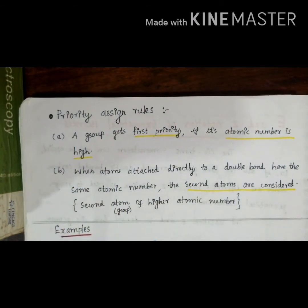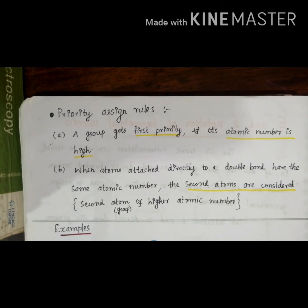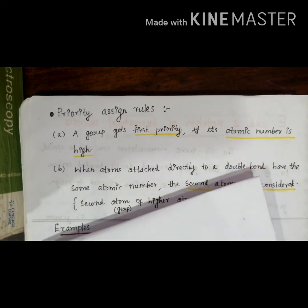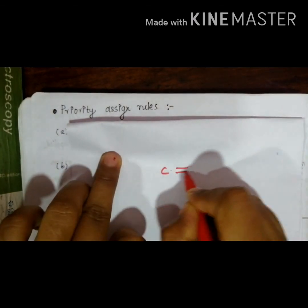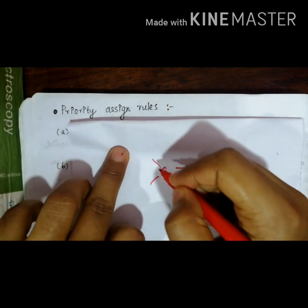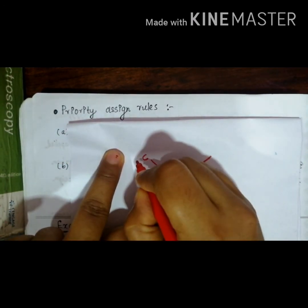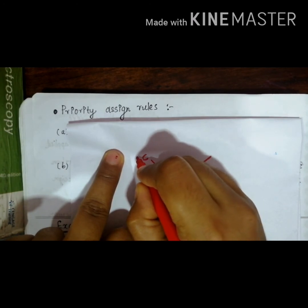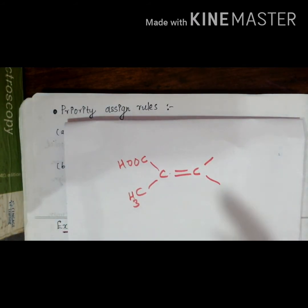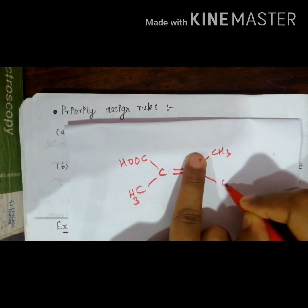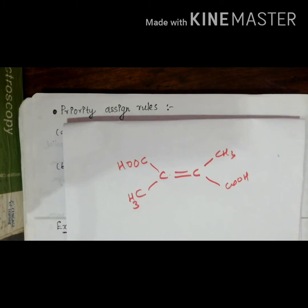Extension rule two: when atoms attached directly to a double bond have the same atomic number, the second atoms are considered. For example, consider a carbon double bond carbon attached with COOH and CH3. In this case, both groups have carbon as the first atom, so they have the same atomic number at the first position.